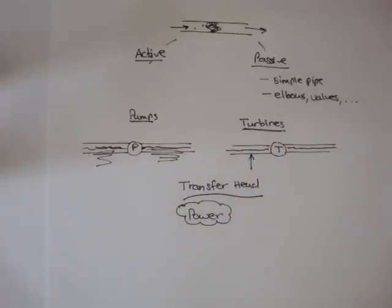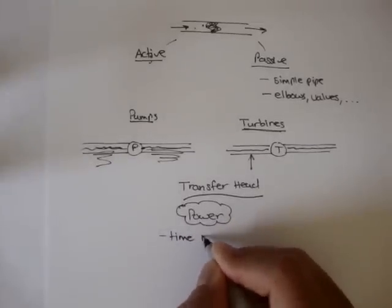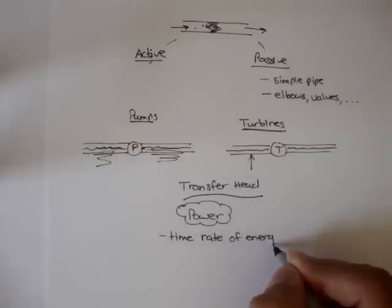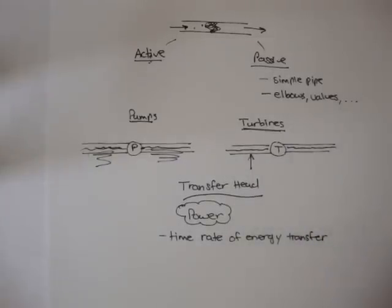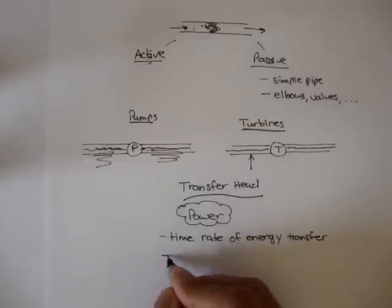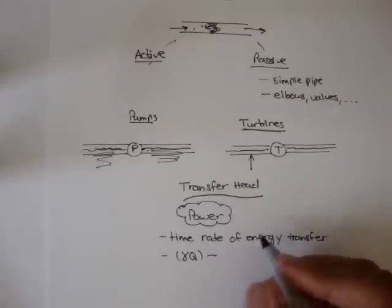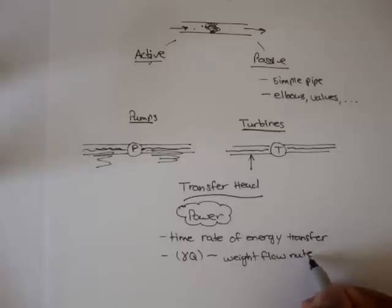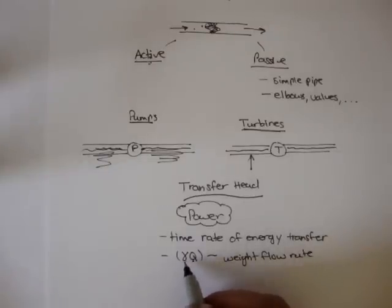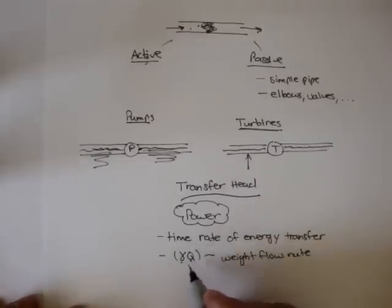Power is defined to be the time rate of energy transfer. Power is the product of the device transfer head and the weight flow rate. The weight flow rate is gamma times Q — it's the specific weight times the flow rate. Remember, Q is equal to the velocity times the cross-sectional area, so Q = V times A.